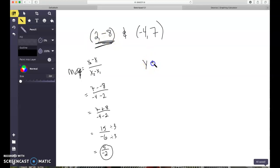So y minus a negative 8, or use y plus 8, equals 5 over negative 2, x minus 2.